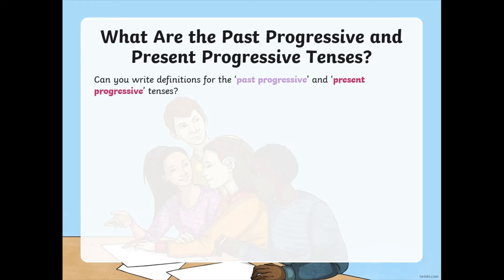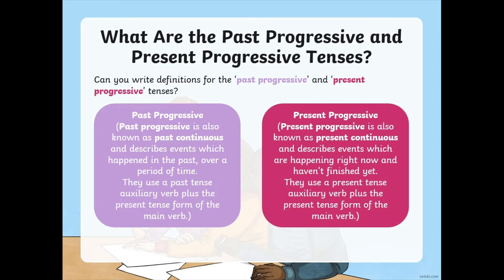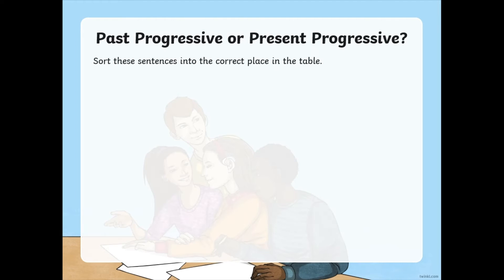Past progressive and present progressive — sometimes known as continuous. Past progressive, also known as past continuous, describes events which happened in the past over a period of time. They use a past tense auxiliary verb plus the present tense form of the main verb. Present progressive or present continuous describes events which are happening right now and haven't finished yet — using a present tense auxiliary verb plus the present tense of the main verb. So past progressive would be was or were plus the verb with -ing: 'I was kicking the ball.' Present progressive would be am, are, or is: 'I am kicking the ball.'